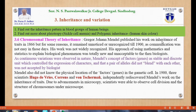Gregor Johann Mendel published his work on inheritance of traits in 1866, but it remained unnoticed or unrecognized till 1900, as communication was not easy in those days. His approach of using mathematics and statistics to explain biological phenomena was totally new and unacceptable to biologists. Mendel's concept of the factor or gene as a stable and discrete unit controlling expression of characters, and that a pair of alleles did not blend with each other, was not accepted by biologists.